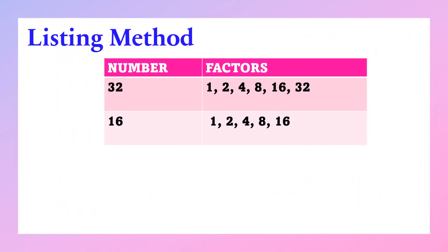Listing method. When we say listing method, we're going to list all the factors of the given number. For example, we have 32. What are the factors of 32? We have 1, 2, 4, 8, 16, and 32. How about 16? List all the factors of 16. We have 1, 2, 4, 8, and 16. And now, from the factors we have, get the common factors.